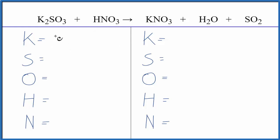Let's count the atoms up. We have two potassiums, one sulfur, three oxygens plus these three oxygens. That gives us six, one hydrogen, and one nitrogen.